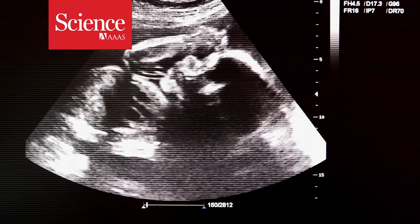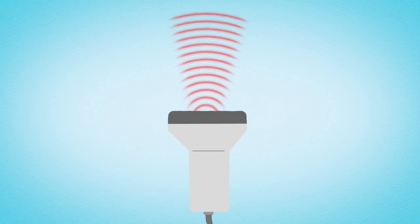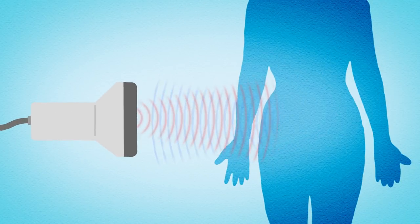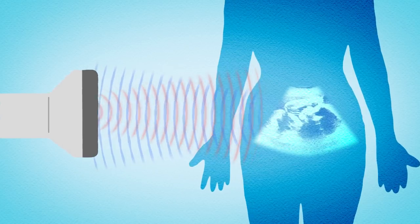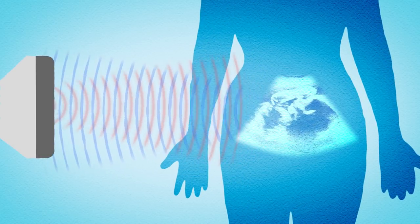Ultrasound is one of the most common tools used to survey the human body. By emitting high-frequency tones and recording the echoes, the reflected sounds combine to form an image that's both easy to read and much safer than other forms of medical imaging.